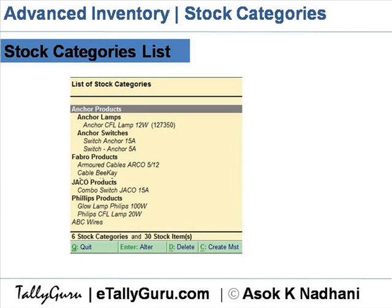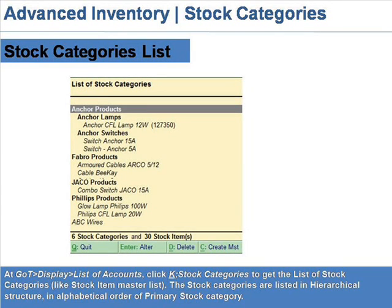Stock Categories List. At Gateway of Tally, display list of accounts. Click K for Stock Categories to get the list of stock categories, like the list of stock item master. The stock categories are listed in a hierarchical structure in alphabetical order of primary stock category.